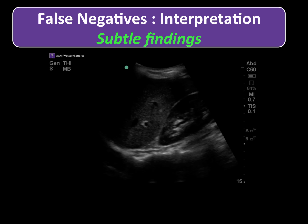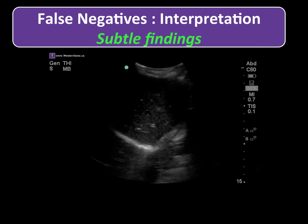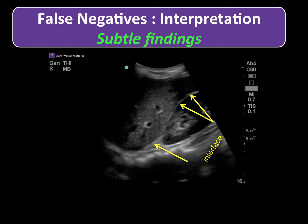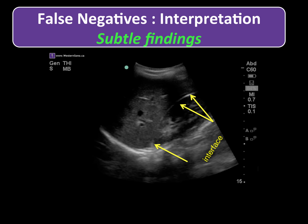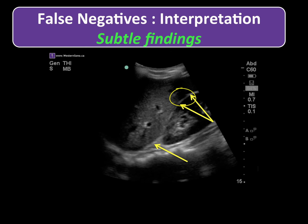Very subtle bleeding may be missed if one is not diligent in performing the FAST exam in a methodical manner. It bears repeating that once the area of interest is identified, your hand is planted and a very slow sweep performed, looking carefully for what may only be a small amount of free fluid. A quick sweep may have led to a miss in this very subtle positive study.